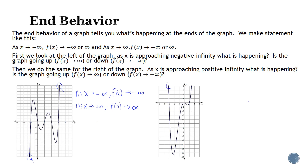For graph number two, both ends are going up. So as x approaches negative infinity, f of x is going up towards positive infinity. And as x approaches positive infinity, f of x is going up towards positive infinity.